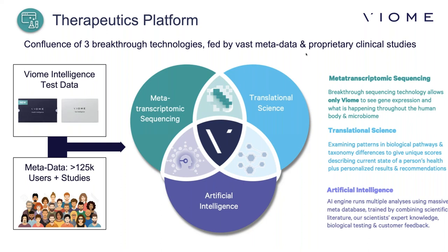We take the RNA sequencing information, the gene expression information, and we use translational science to see what the patterns in these pathways are and the differences in gene expressions of an individual. Everybody's different — you can have similar microbiome, but very different pathways being turned on and off. Because the data generates about five gigabytes per individual, we use sophisticated artificial intelligence to run through the databases, compare all the sequencing, and determine the best foods and supplements for someone.